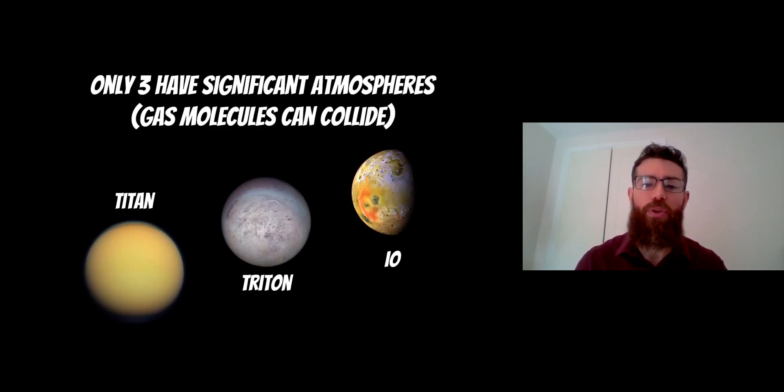We've included quite a few moons that actually have an atmosphere, but only three of them have a significant enough atmosphere where the gas molecules can actually collide. So the density of that atmosphere is enough that particles and gas molecules can collide with one another. All the other ones are quite thin and collisionless.